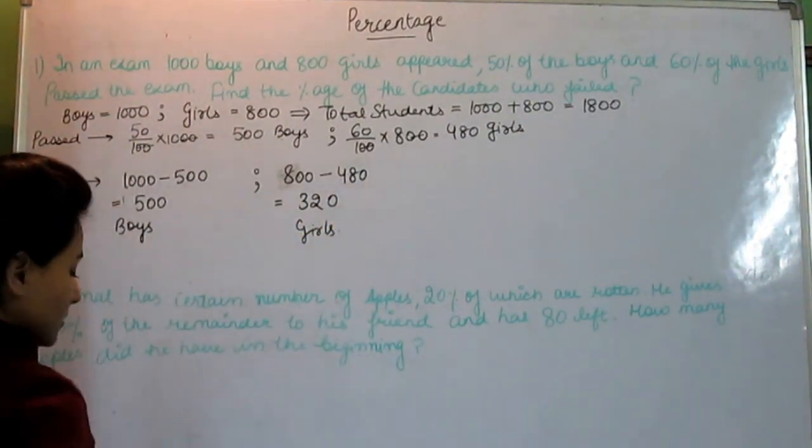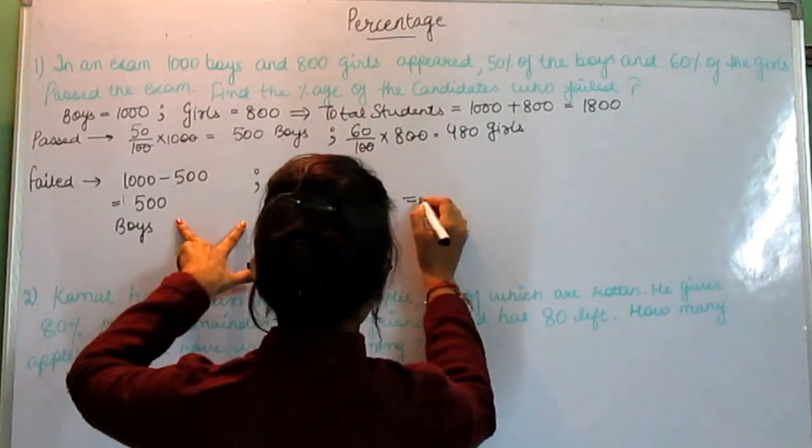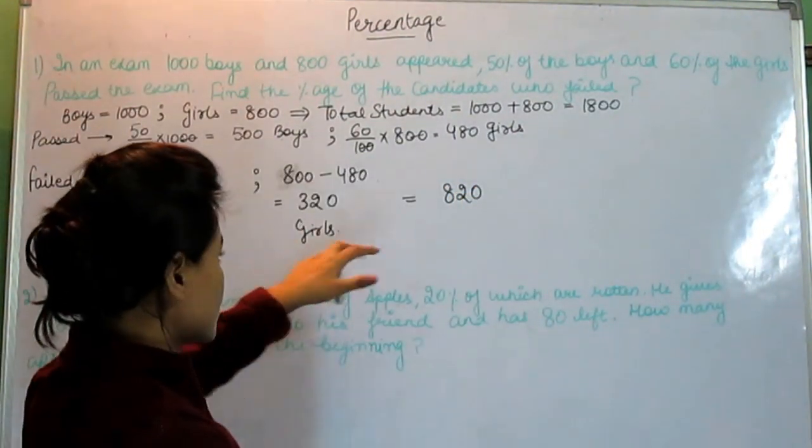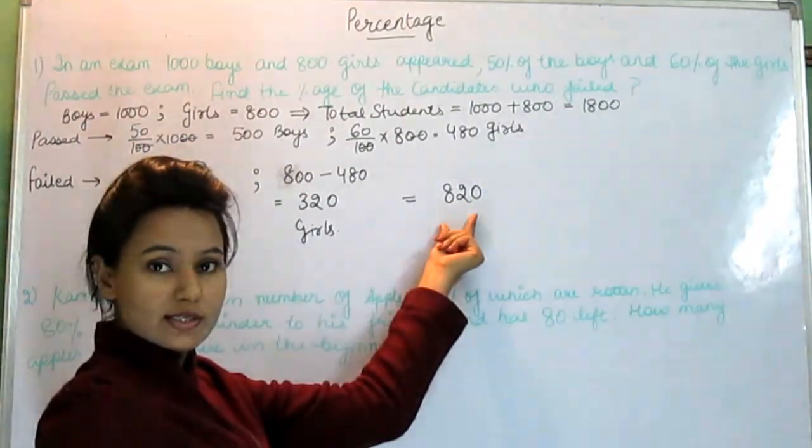The total number of students is 820. Boys and girls, 820 students have failed.